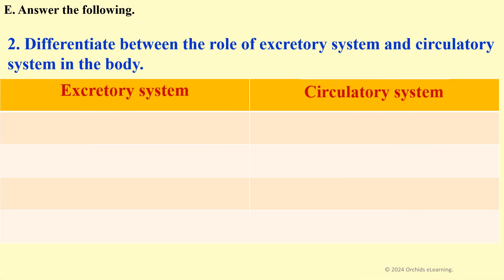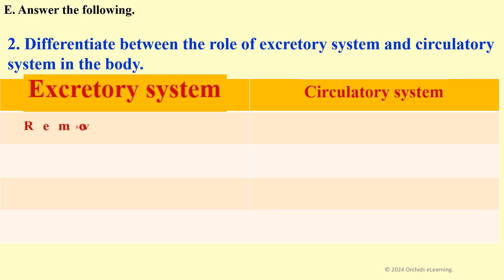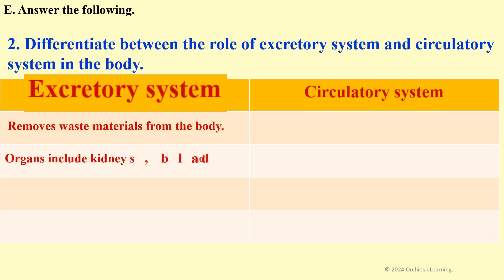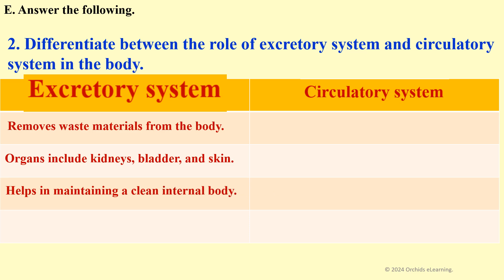Differentiate between the role of the excretory system and circulatory system in the body. Excretory system: removes waste materials from the body. Organs include kidneys, bladder, and skin. Urine helps in maintaining a clean internal body. Removes liquid waste like urine.